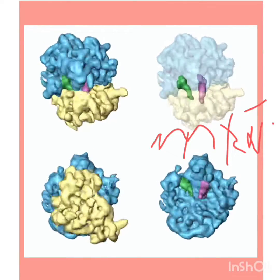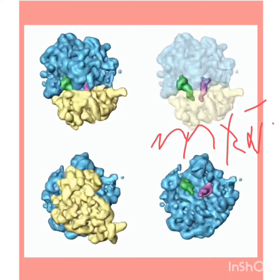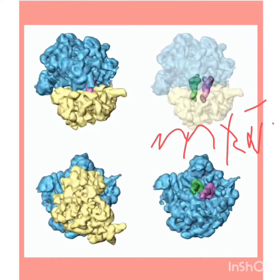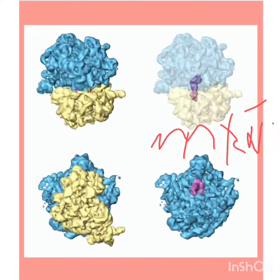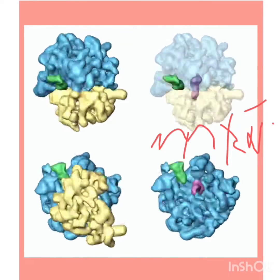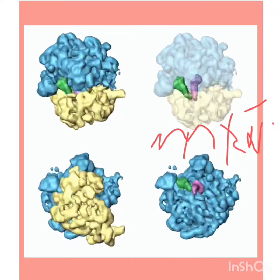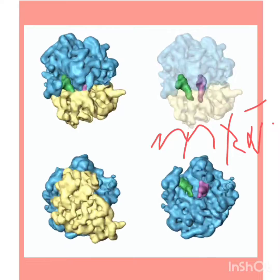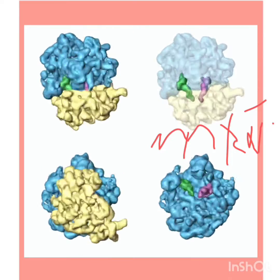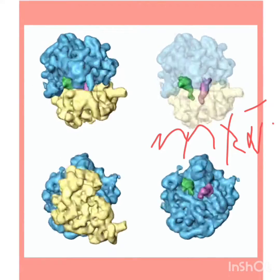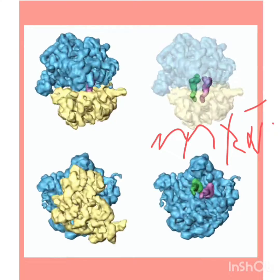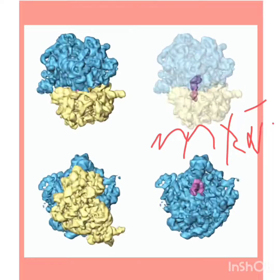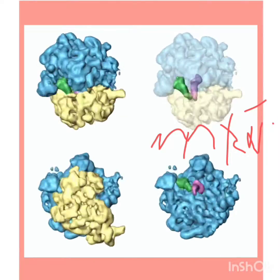Which cells do not have ribosomes? The smooth endoplasmic reticulum, which is especially abundant in mammalian liver cells, does not have abundant ribosomes. This is because in liver cells, lipid synthesis occurs rather than the metabolic processes requiring ribosomes.